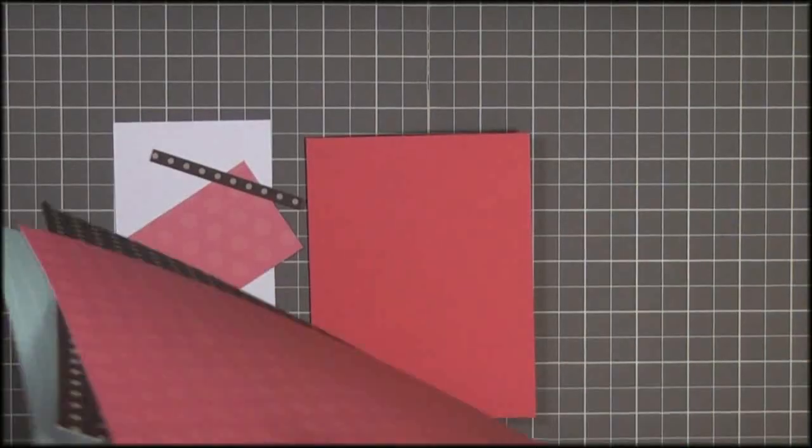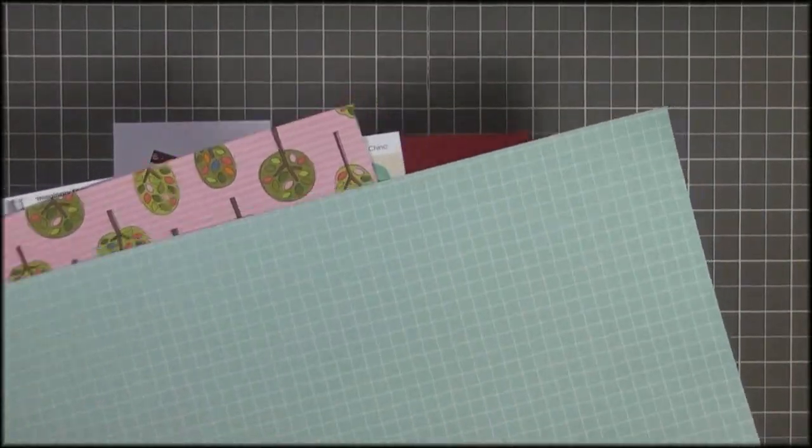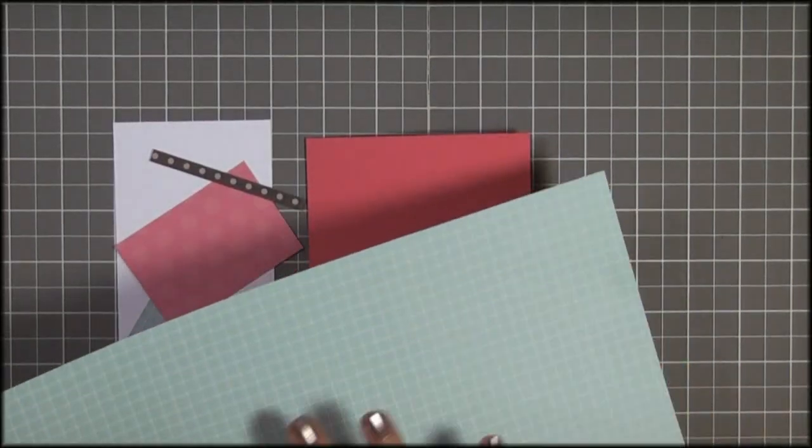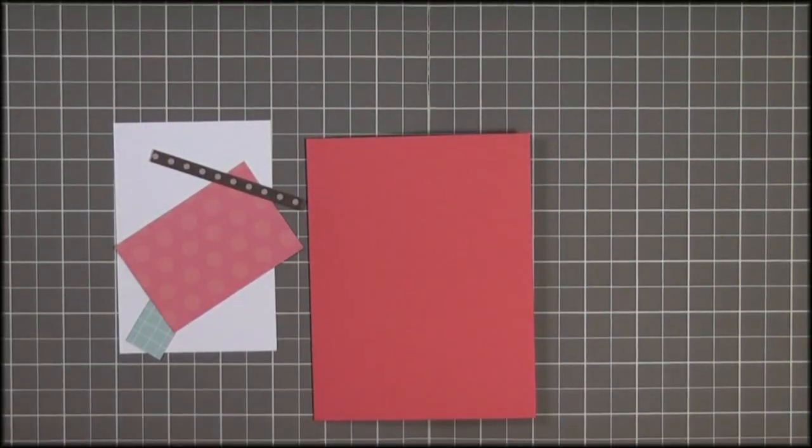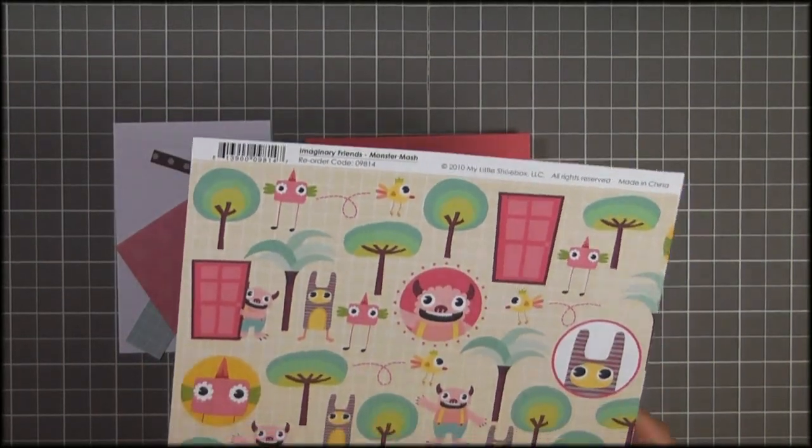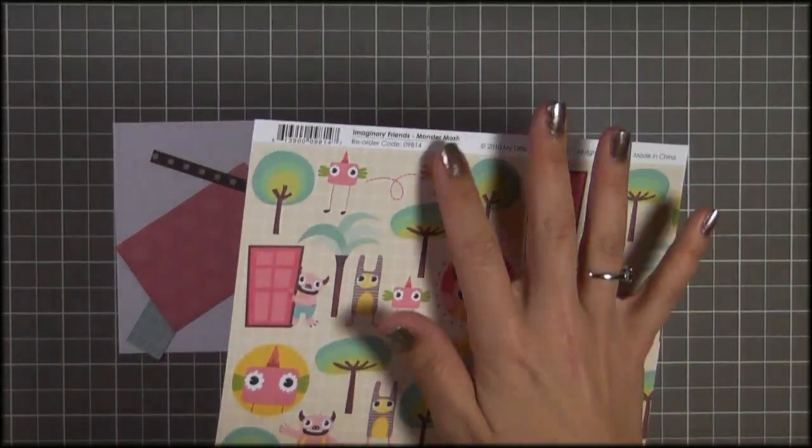The collection is, let's see, this little grid paper is from the Imaginary Friends Knock Knock. So I'm going to be using this side. And then I'm going to be using the pink polka dots here. And again, this is from the Imaginary Friends Collection, Monster Mash.